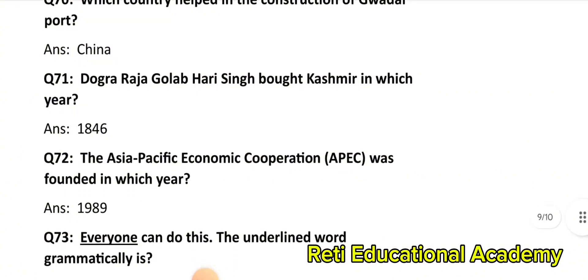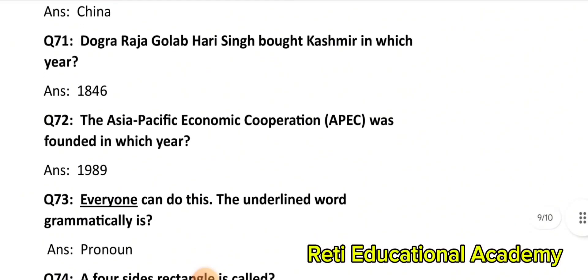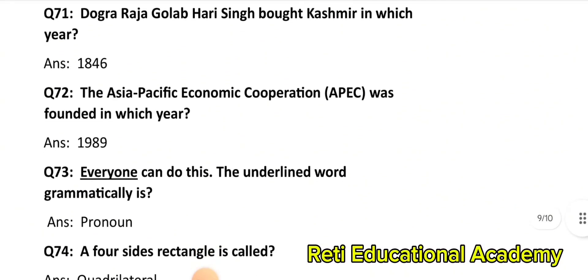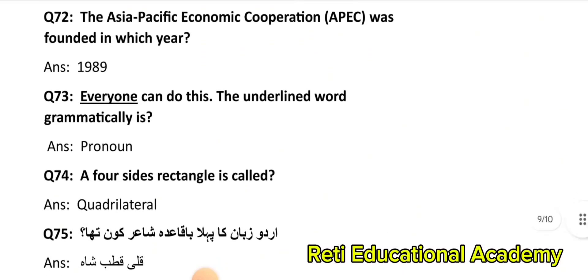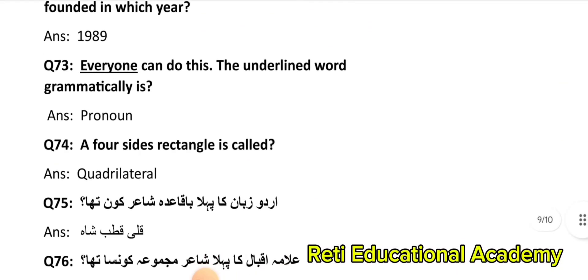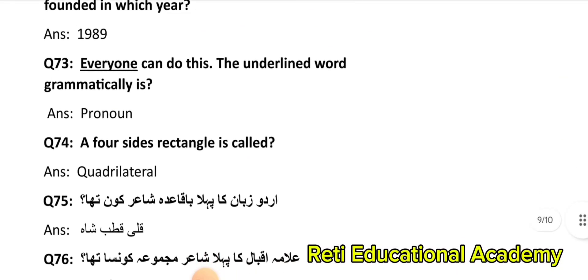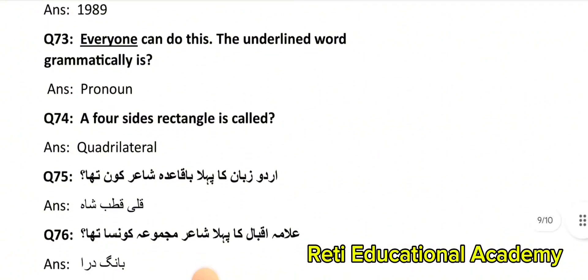Question number 73: In the sentence 'Everyone can do this,' the underlined word 'Everyone' is grammatically: Pronoun. Question number 74: A four-sided rectangle is called: Quadrilateral. Question number 75: Urdu zabaan ka pehla bakka adha shair kaun tha? Kuli Khatab Shah. Question number 76: Allama Iqbal ka pehla shair majmua kaun sa tha? Bang-e-Dara.